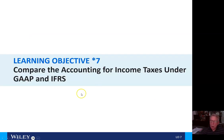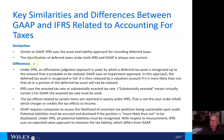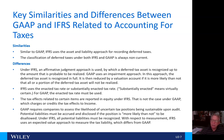Now we'll look at comparing the accounting for income taxes under GAAP and IFRS. Looking at similarities, IFRS is similar to GAAP in that it uses the asset and liability approach for recording deferred taxes. It's also similar in that the classification of deferred taxes under both IFRS and GAAP is always non-current. But there are some differences.